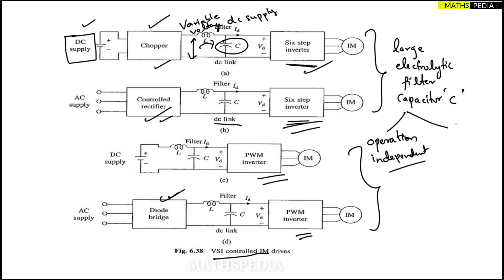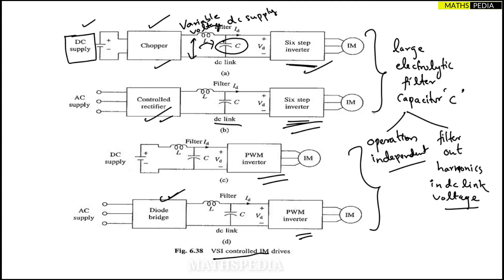The second purpose of the large electrolytic filter capacitor C is to filter out harmonics and fluctuations present in the DC link voltage. So to summarize: first purpose is to make the PWM or six-step inverter operate independently of the chopper, controlled rectifier, or diode bridge; second purpose is to filter out harmonics and voltage fluctuations.